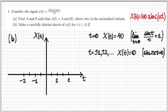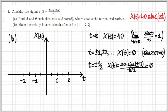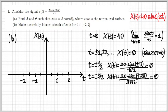For t equal to an integer, x of t is identically 0, because the sine of an integer multiple of 2π is 0. For t equal plus or minus one half, if we replace t equal 1/2 or minus 1/2 in the expression for x of t, we find that x of t is 20 sine of plus or minus π over plus or minus half π, and therefore the value of the signal is 0. For t equal 3/2, the value is also 0 because the sine is evaluated at an integer multiple of π.